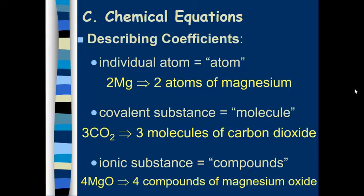When it's a covalent substance, such as CO2, that's called a molecule. So we call it three molecules of carbon dioxide. When it's an ionic substance, we call them compounds. So that would be like four compounds of magnesium oxide. I hope you remember the naming systems of ionic and covalent from last unit.